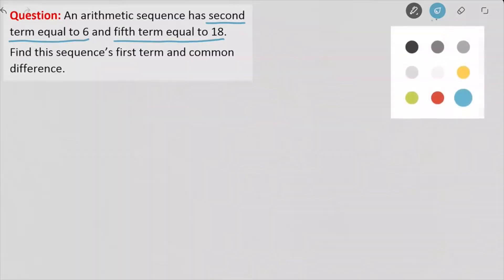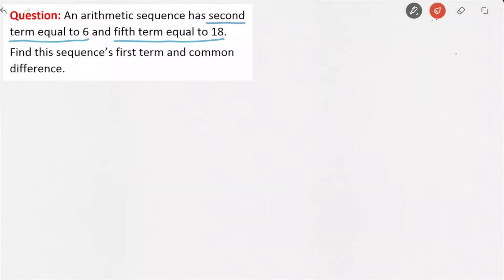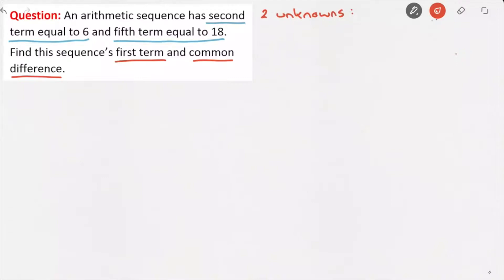We're also asked two things: we're asked to find the sequence's first term and its common difference. So in other words, we have two unknowns. Those two unknowns are the first term, which I'll write U1, and the common difference, which I'll write D.